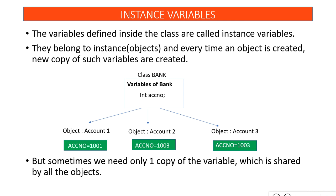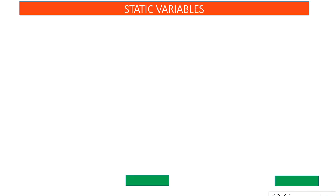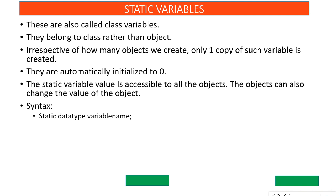Sometimes there are cases when you need only one copy of a variable — one that is created and shared by all objects. Such variables are called static variables, also called class variables. Static variables belong to the class rather than the object, and irrespective of how many objects you create, only one copy is created and shared. One advantage is that static variables are automatically initialized to zero. To create a static variable, you just use the static keyword during declaration.